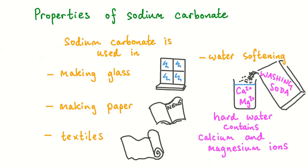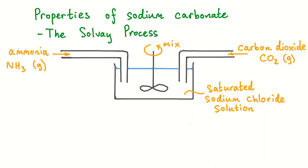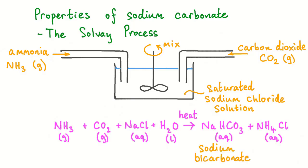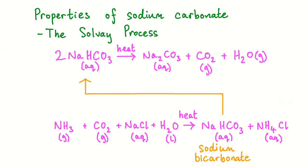Sodium carbonate was sold as washing soda exactly for this purpose. Sodium carbonate is manufactured in an industrial process called the Solvay process. Ammonia gas and carbon dioxide gas are passed into saturated sodium chloride solution. This reaction produces sodium bicarbonate. Upon heating, the sodium bicarbonate solution decomposes into sodium carbonate solution, carbon dioxide and water vapor.